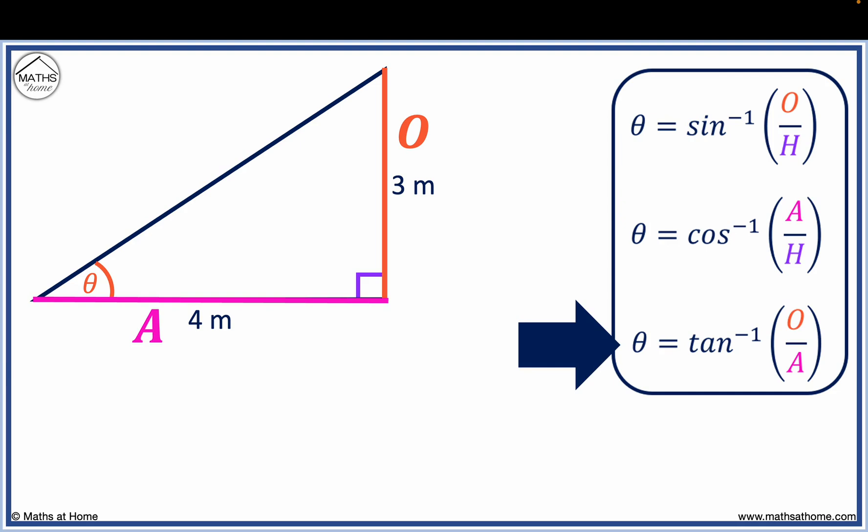We simply substitute O for three meters and A for four meters. A calculator is needed to work this out. We obtain 36.9 degrees as the angle.